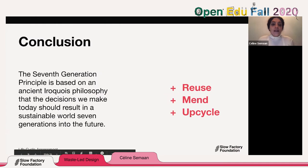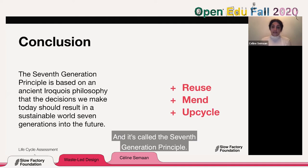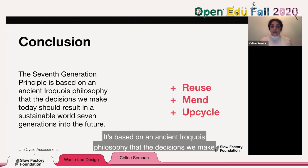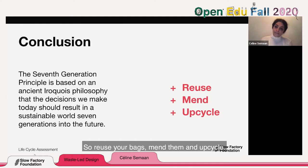These conclusions were made thousands of years ago by Indigenous knowledge and wisdom — it's called the Seventh Generation Principle. It's based on an ancient Iroquois philosophy that the decisions we make today should result in a sustainable world for seven generations into the future. So reuse your bags, mend them, and upcycle.